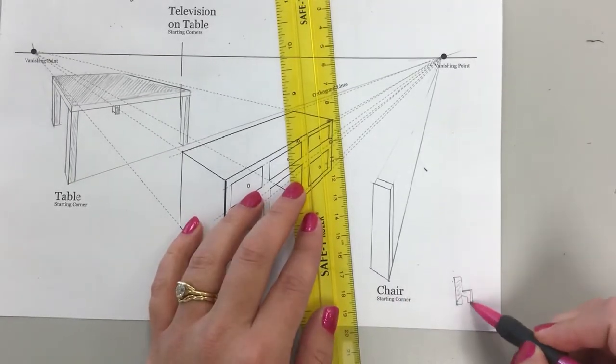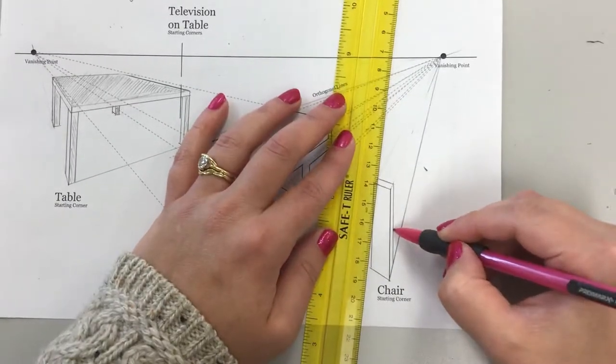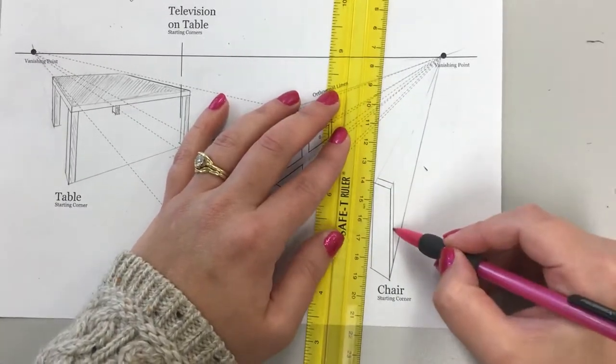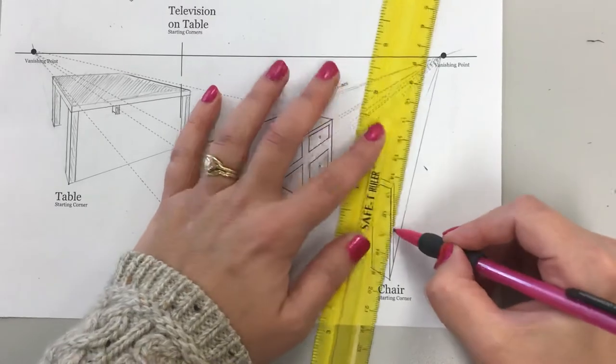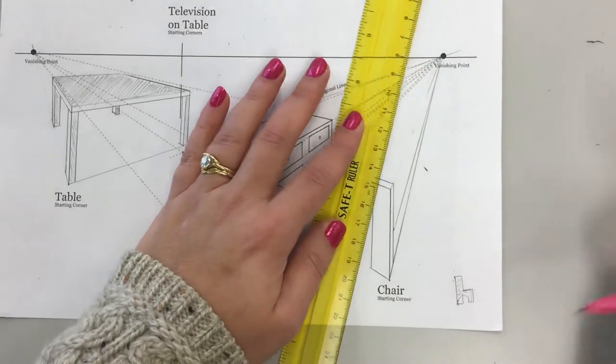I need the seat, and I need some front legs. I'm going to make my seat somewhere right here. I have a longer back than it is seat, and I think that looks more realistic.